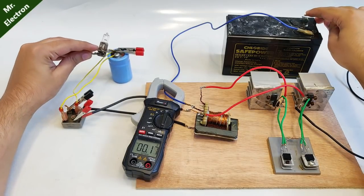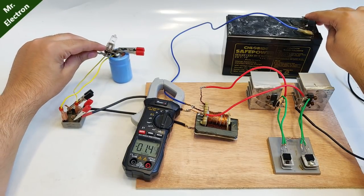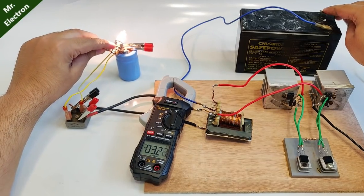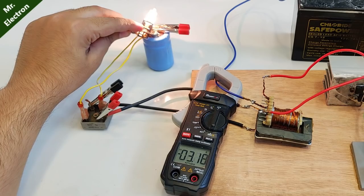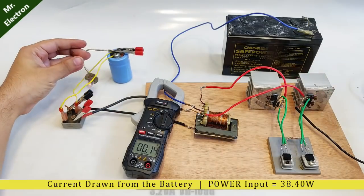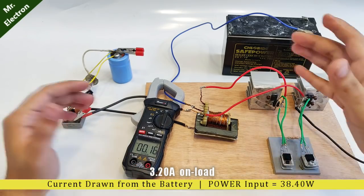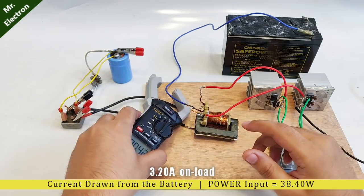Once again charging it. Around 3.20 amps. 3.20 amps is what this circuit is drawing when loaded from the battery. Now let's see what it is giving out.